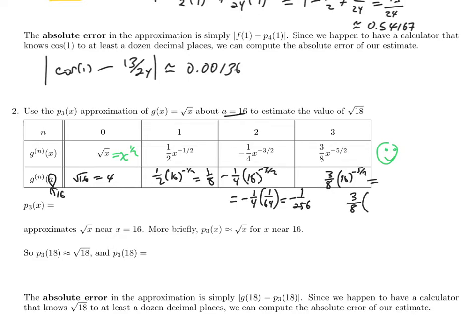So this will be 3 eighths. And 16 to the minus 5 halves, that'll be 4 to the fifth, which is 1,024 to the negative 1. So 1 over 1,024. So 16 to the minus 5 halves is 1,024, whatever that is.